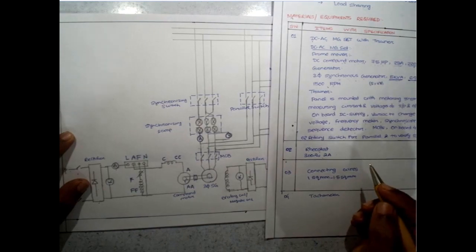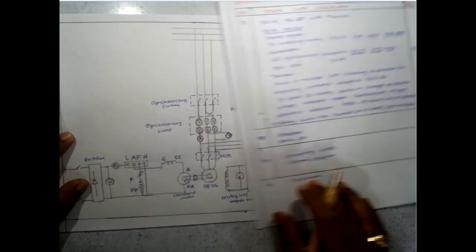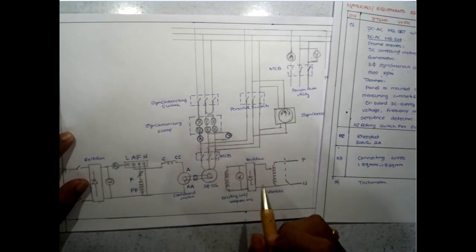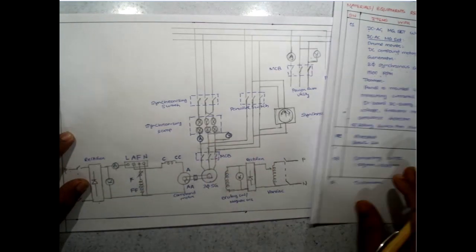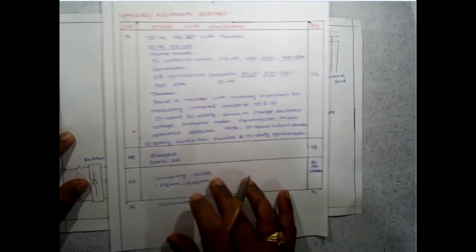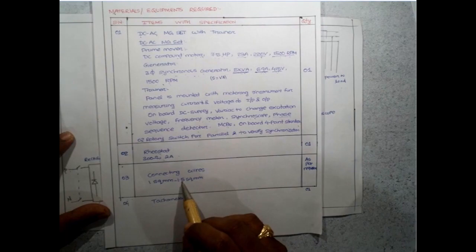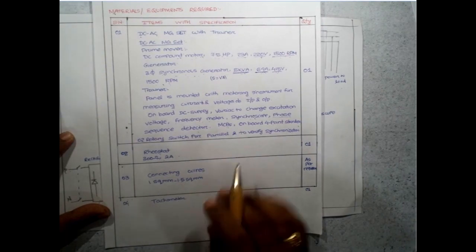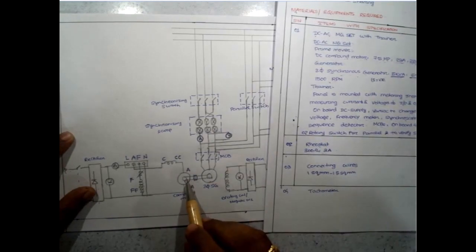In order to connect all the connectors, we will see them on the panel later when doing the practical. I also need certain connecting wires. After that, a tachometer is required to measure the speed of this compound motor.